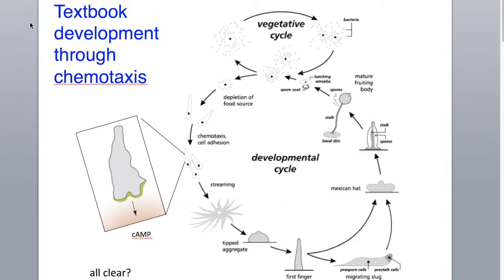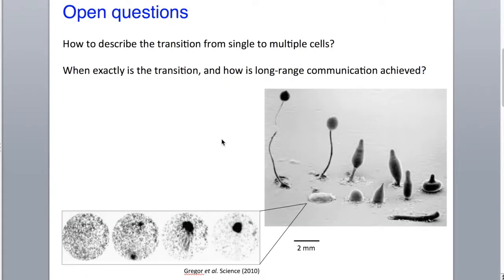During the normal vegetative cycle, these amoeba feed on bacteria. However, when they are starved, they create cyclic AMP, a chemo-attractant, and chemotax or move towards it, form these streams, ultimately a slug, which moves around, and it forms stalk and spore cells, and these spores disperse and allow the amoeba to survive. Although it is a very well characterized system, we ask two main questions.